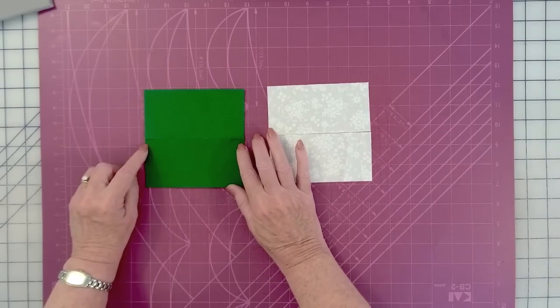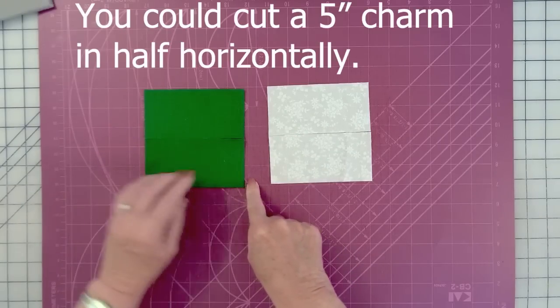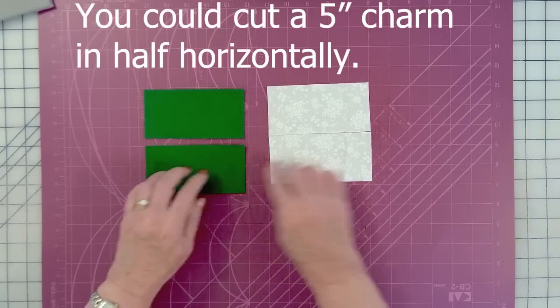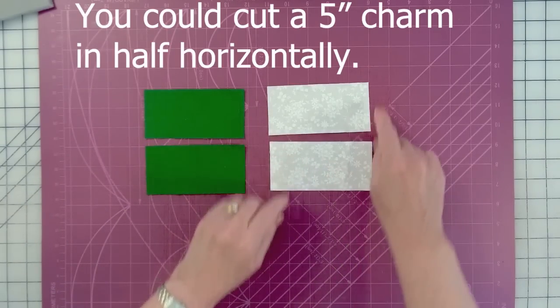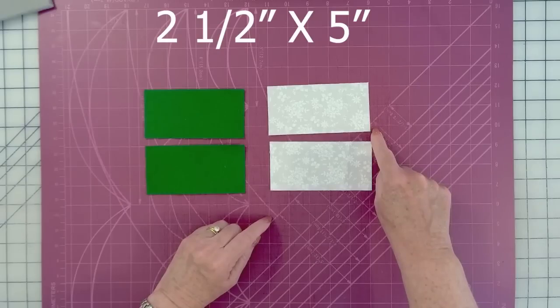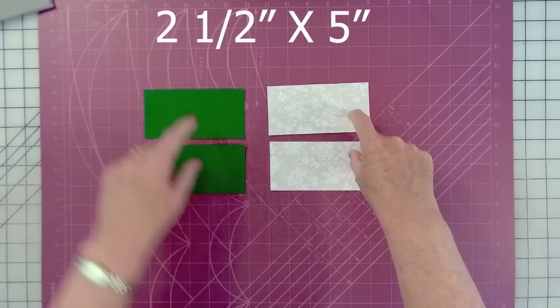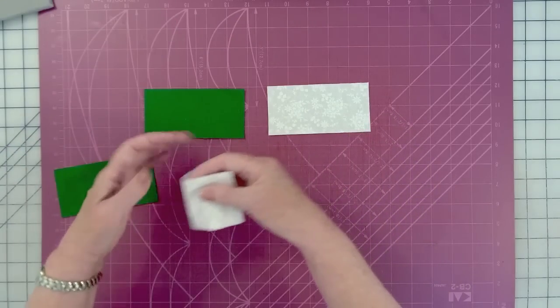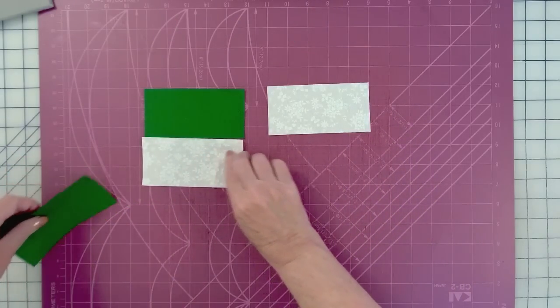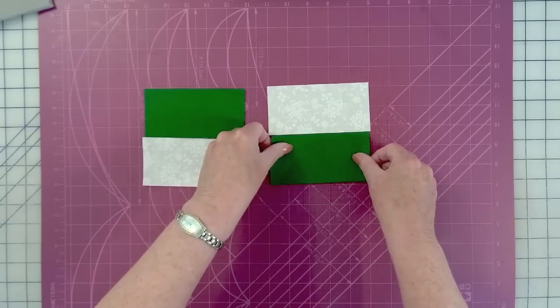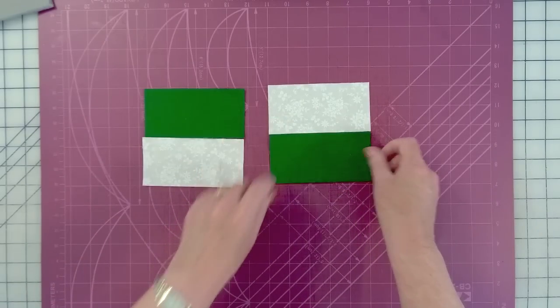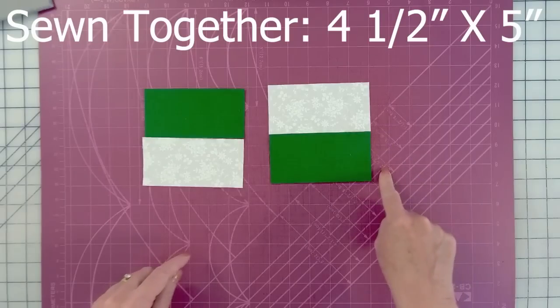The first piece we're going to make is bar blocks, and so if you took a five inch charm, and you cut it in half, you would have a piece of fabric that's two and a half by five. So you'll have two white and two green. If you alternate these and sew them together, you will end up with the bar blocks that, when sewn together, are four and a half by five.